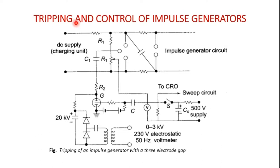Next, we have tripping and control of impulse generators. In large impulse generators, sphere gaps are generally used for the spark gap arrangement, along with gaps formed by hemispherical connectors. These gaps are arranged so that sparking of one gap results in automatic sparking of another whenever voltage is impressed on it. For consistency in sparking, UV light irradiation is provided from the bottom of all the spark gaps.